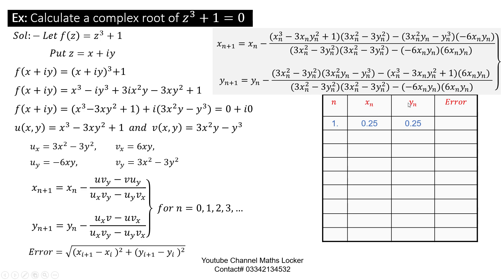Similarly, take y_n = 0.25, the same as x_n. Substituting 0.25 for x_n and y_n in the formula and simplifying, we get results. For the second iteration, x_{n+1} = 0.166667 and y_{n+1} = 2.833, which comes from the y_{n+1} formula.